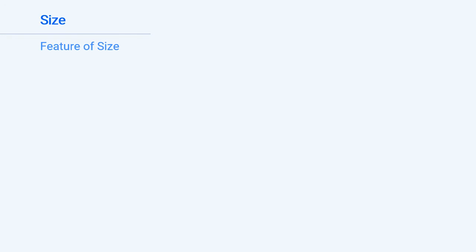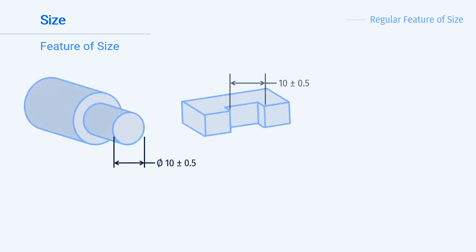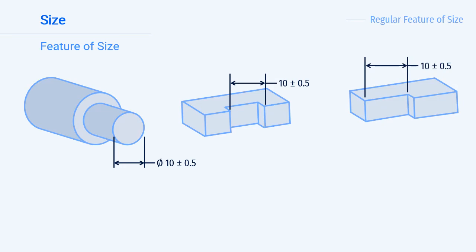Next is to explain what is and is not a feature of size. We will first start with regular features of size. There are also irregular features of size which we will explain later, but for now when we refer to feature of size we are referring to regular features of size, as they are far more common. We will look at three objects: a step shaft, a rectangular cutout, and a step down in a block. Each of these has a nominal value of 10 with a tolerance of plus or minus 0.5. We have to determine which of these are features of size.